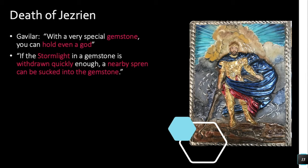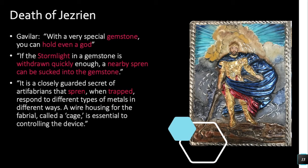From Navani's epigraphs in Rhythm of War: 'If the Stormlight in a gemstone is withdrawn quickly enough — sucked out quickly enough — a nearby spren can be sucked into the gemstone.' Maybe this is some equity of investiture, where taking investiture out of the gemstone requires replacing it with investiture from the spren to keep a balance. Another epigraph says: 'It is a closely guarded secret of the art of Fabrials that spren, when trapped, respond differently to different types of metals. A wire housing for the fabrial, called a cage, is essential to controlling the device.'